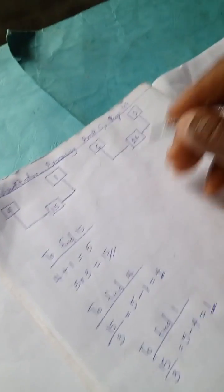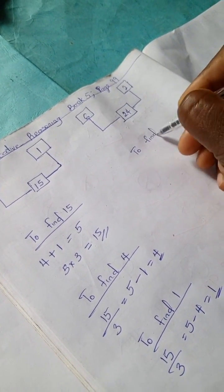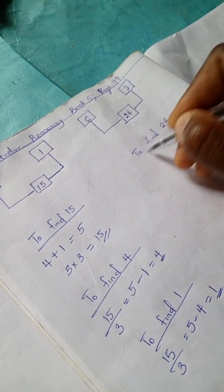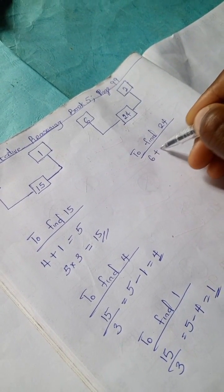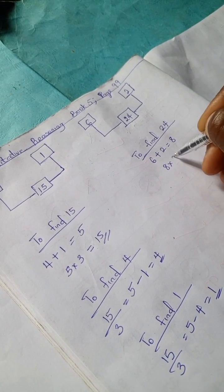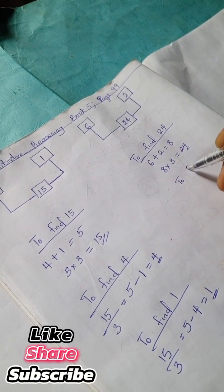That's it for this. Let's go to the next one to find 24. Let's see if it works for this side. We're going to have 6 plus 2 is 8, and 8 times 3 is 24.